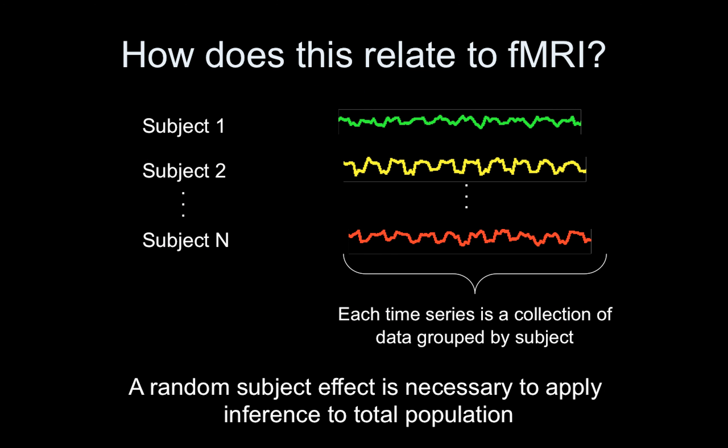So let's see what this looks like with fMRI data. So our repeated measures here, instead of it being hairs on the head, it's time points in an fMRI run. So I have a collection of data points that's organized in a time series. The random subject effect is necessary so that we can apply our inference to the entire population, not just our population of subjects for which we have data.